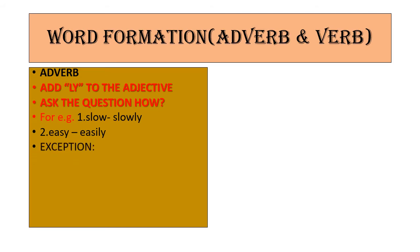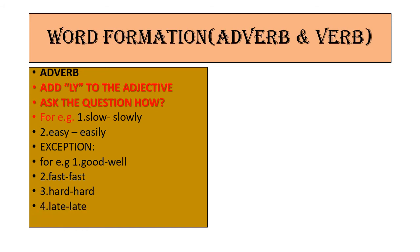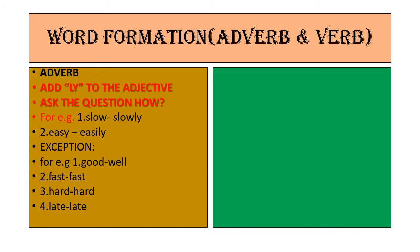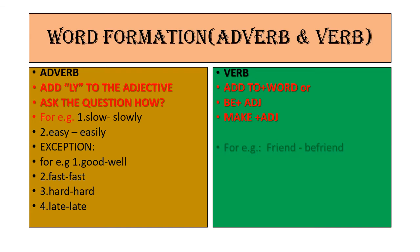To make a verb, check whether you are correct by using the word 'to' before it. Or use 'be + adjective'. For example, the word is 'friend' and you need the verb form. You add 'be' before it — it becomes 'befriend'. So 'befriend' is your verb. To make a verb, add 'be' before the adjective given to you, or use 'to' before the word to check whether you are right.